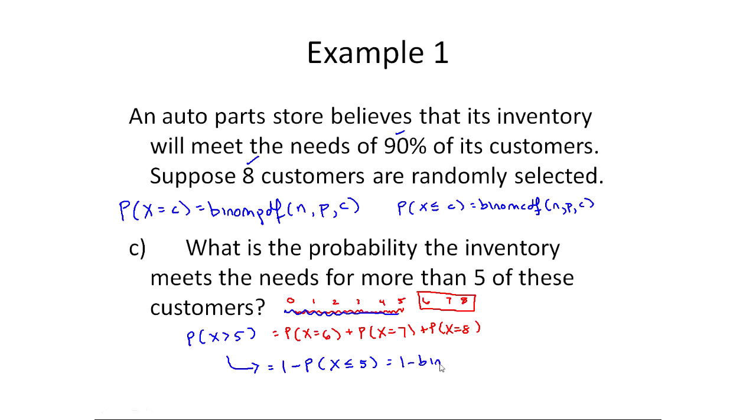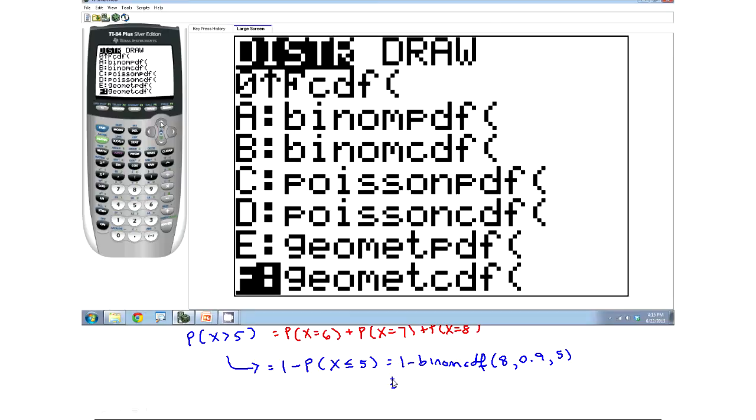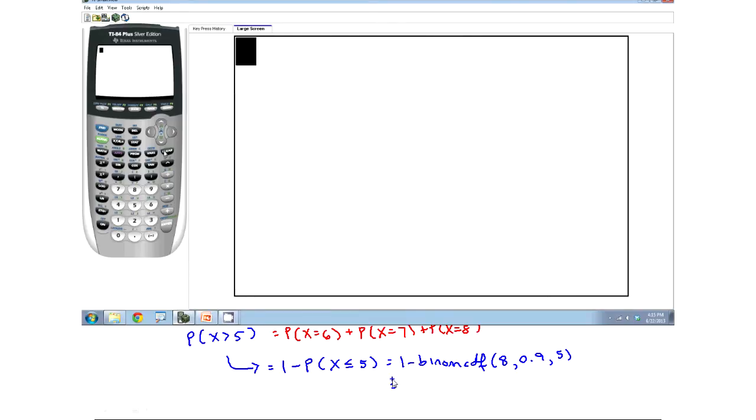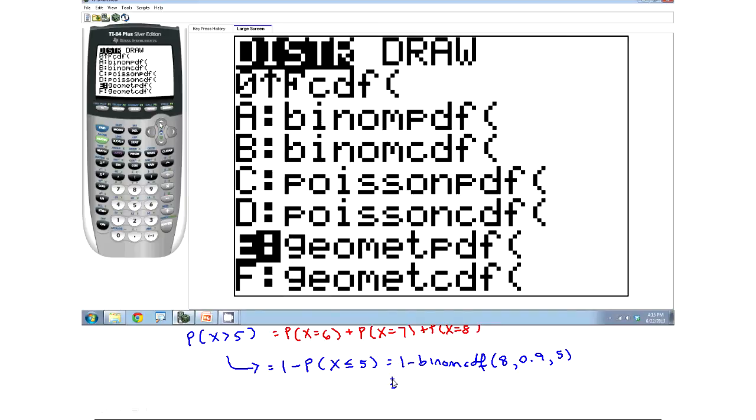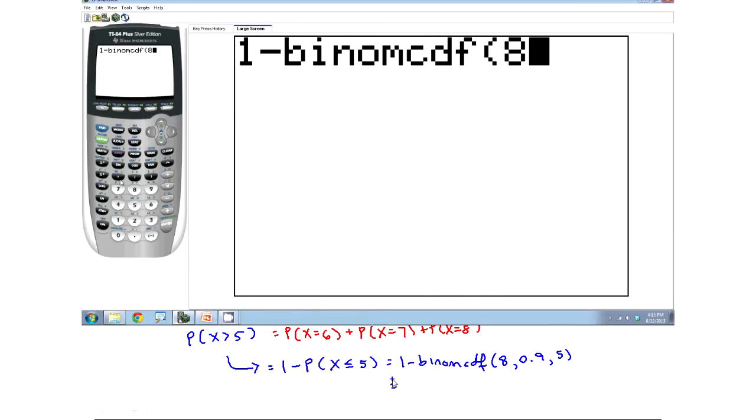So this is one minus the binomial CDF of n, which is eight, p, which is point nine, and c, which is five. Now on the calculator, this is found under the distributions menu. And the way you get there is by pressing second and VARS. Now this is way down on the menu. So typically what I do is I press the up button first. And then I go and I'm able to find CDF. Now be real careful because CDF and PDF are right next to each other. And so before you even go into the menu, so I'm going to clear out of this, before you even go into the menu, you type one and then minus, then you go into the menu second, VARS, go into CDF, binomial CDF.